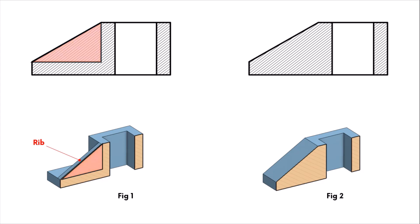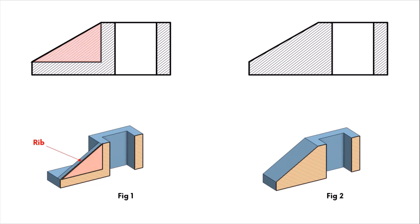Let's modify the front view of the part containing a rib feature as per the special conventional practice. The hatching lines are not applied to the rib area in the front view, thus making the interpretation of the ribs more clear.